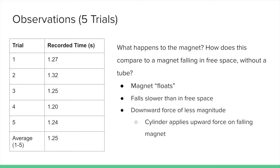Let's ask, what happens to the magnet? How does this compare to a magnet falling in free space without a tube? The magnet appears to float, falling slower than in free space. This is because the net downward force is of less magnitude, as the cylinder applies an upward force on the falling magnet.